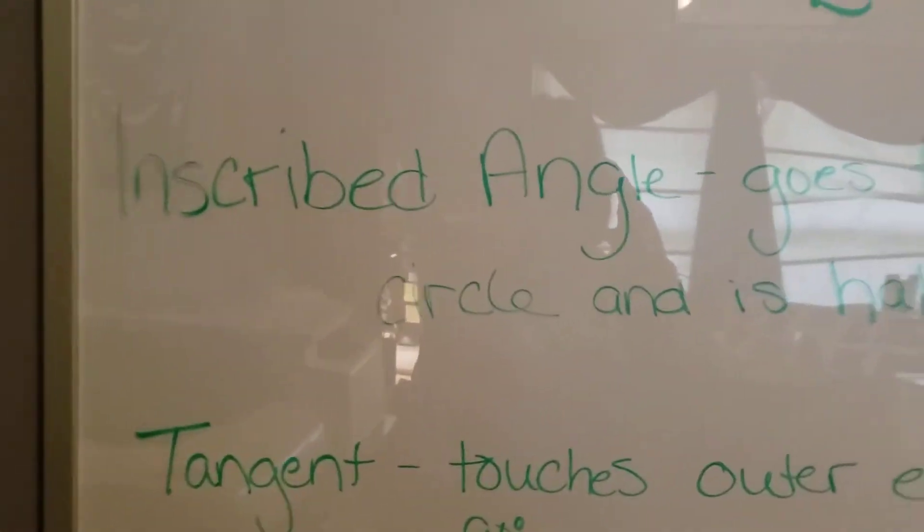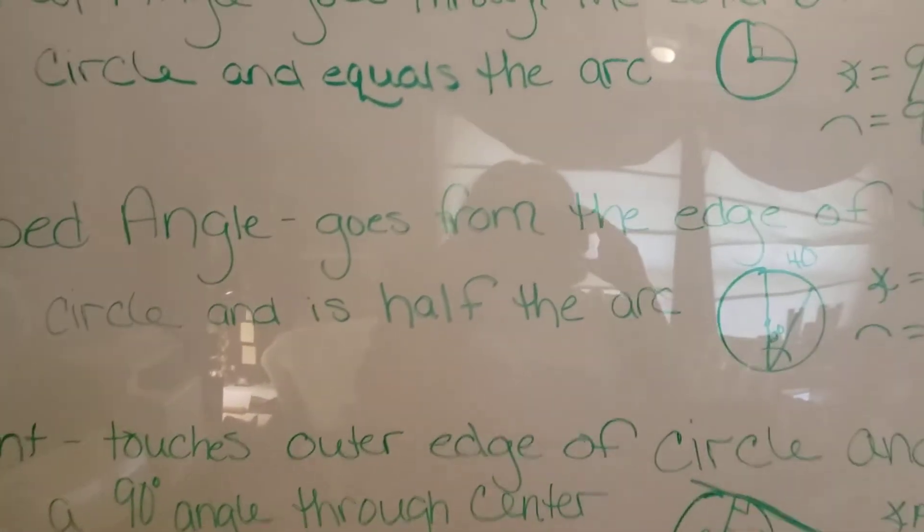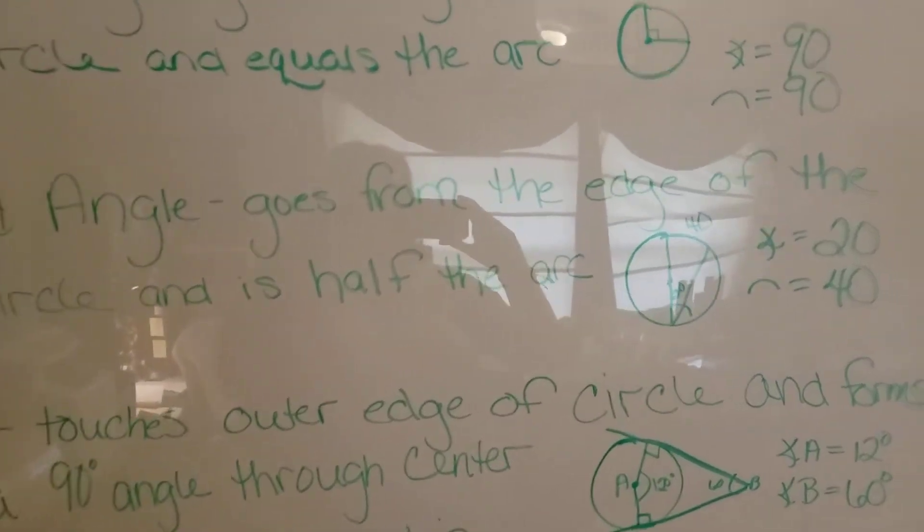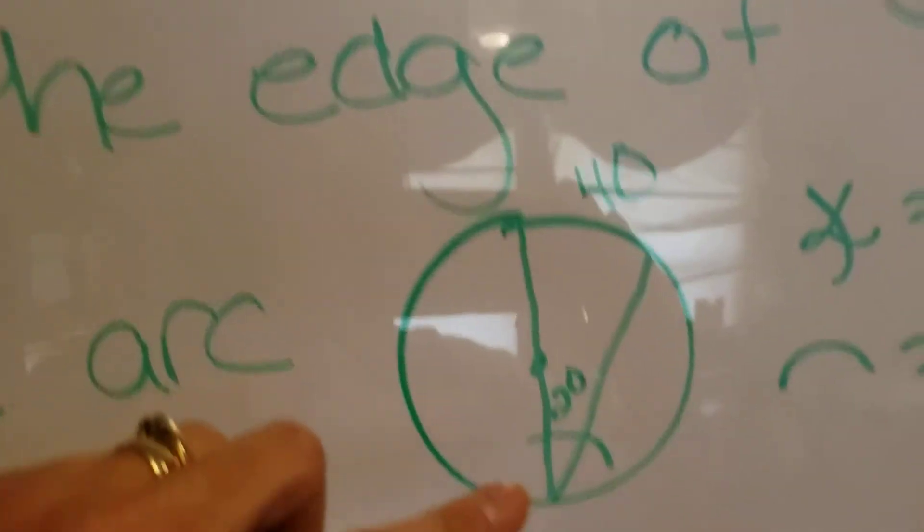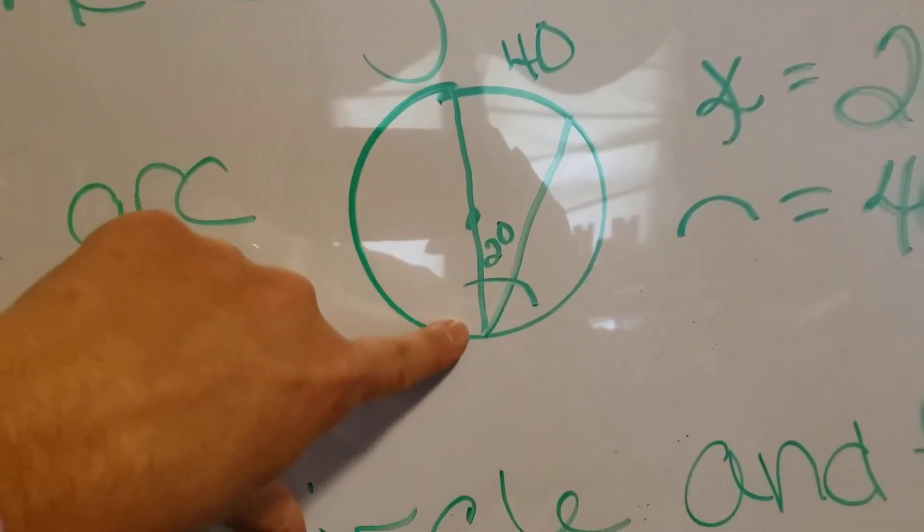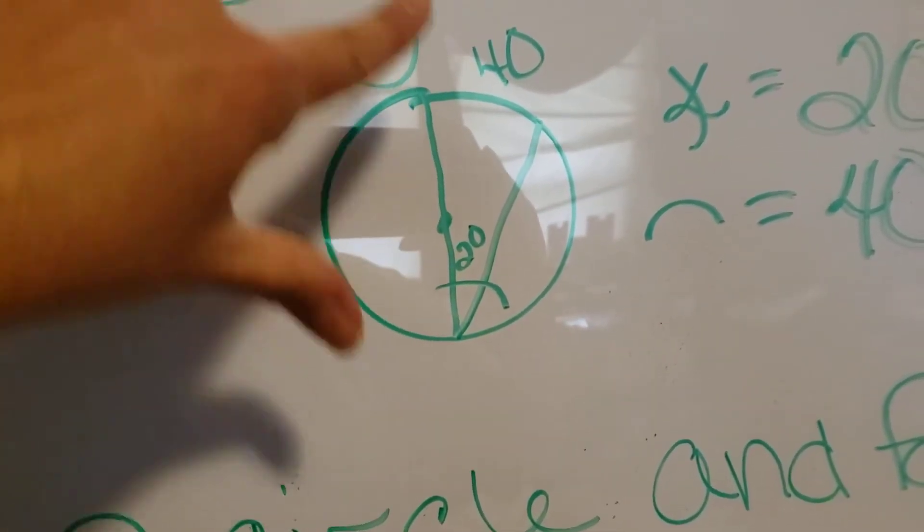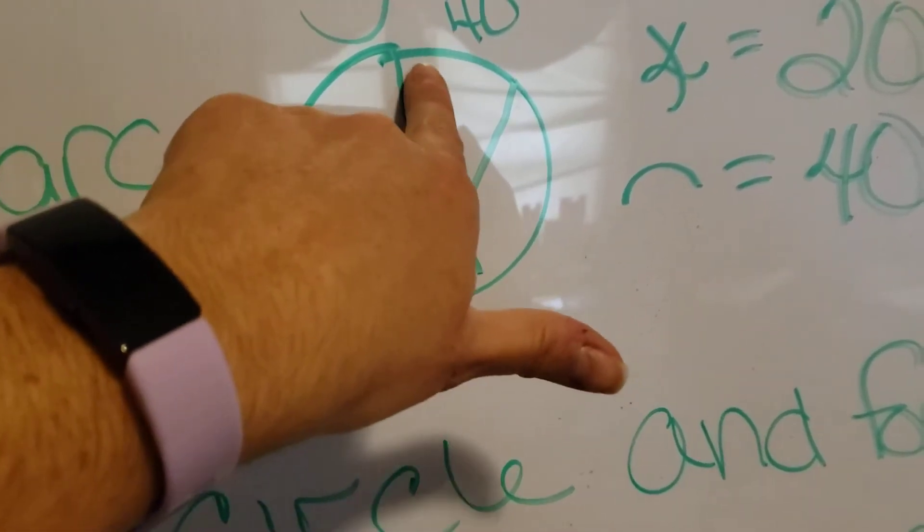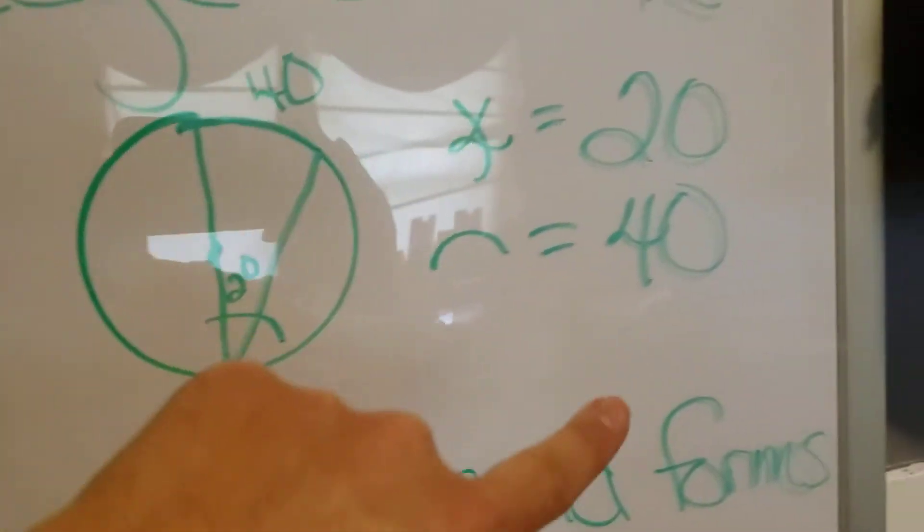If you have an inscribed angle it goes from the edge of the circle and is half of the arc. So here's my circle and this is my center and this is my inscribed angle. If that inner angle is 20 degrees then that arc is 40 degrees.